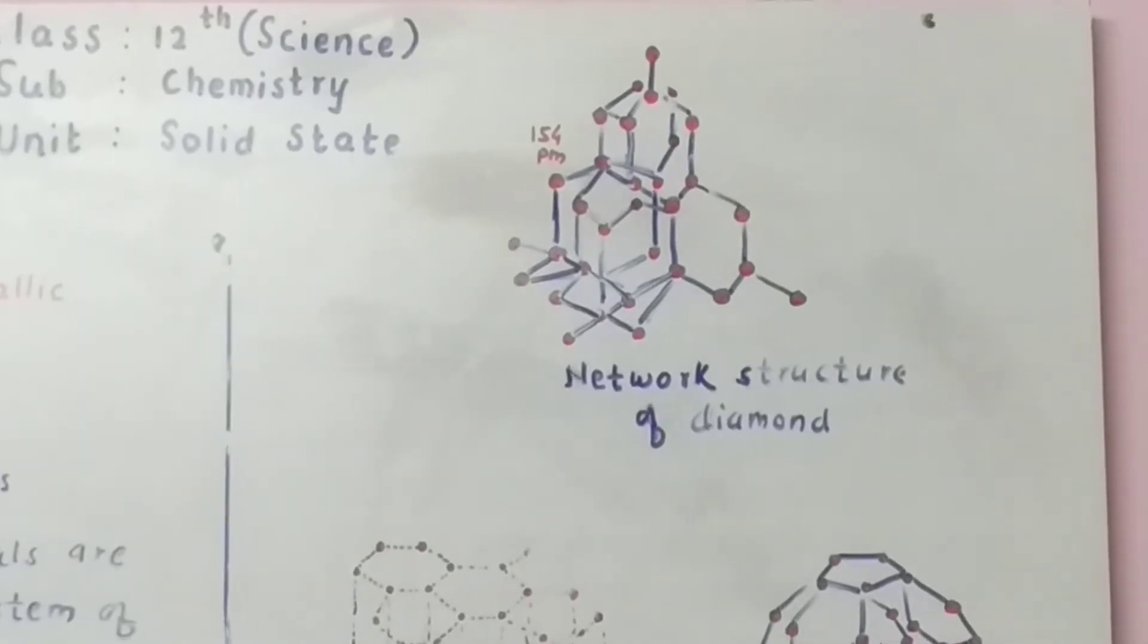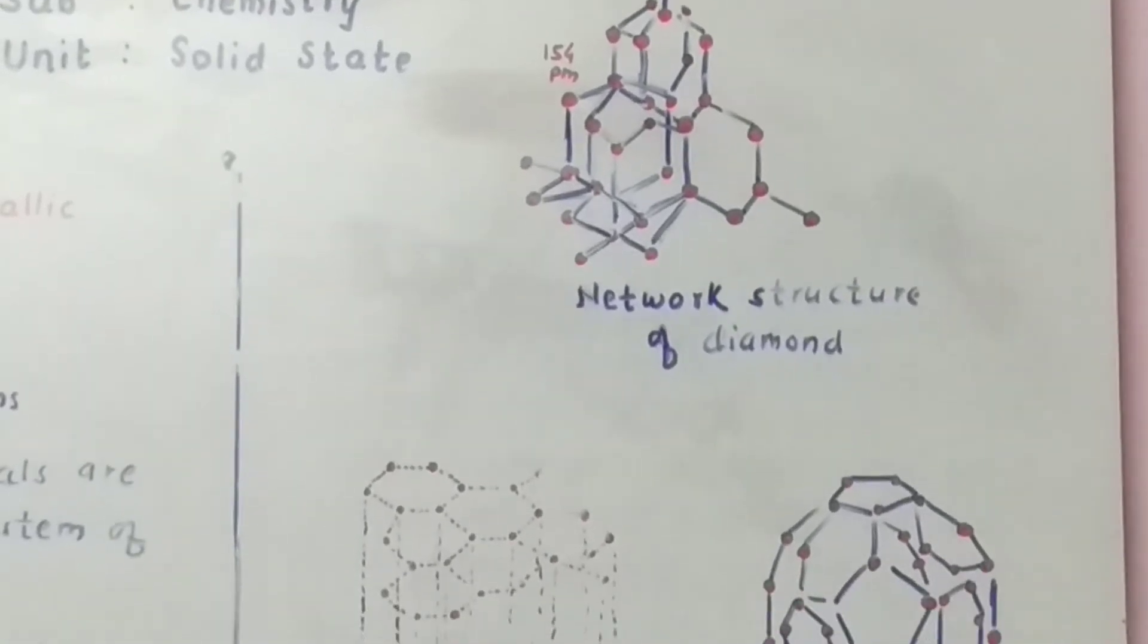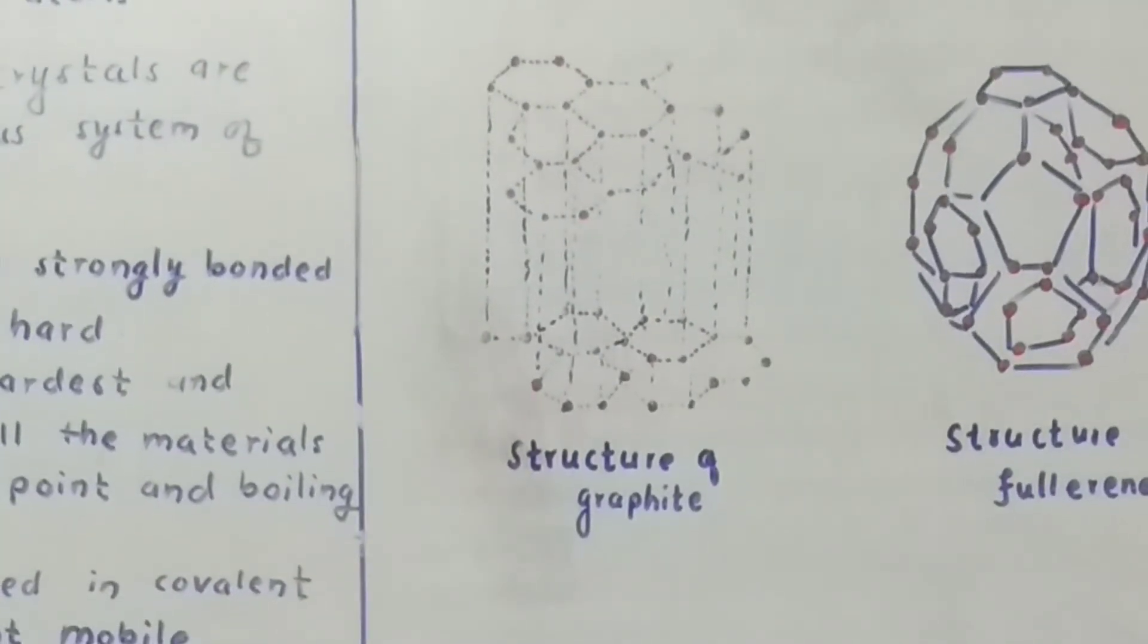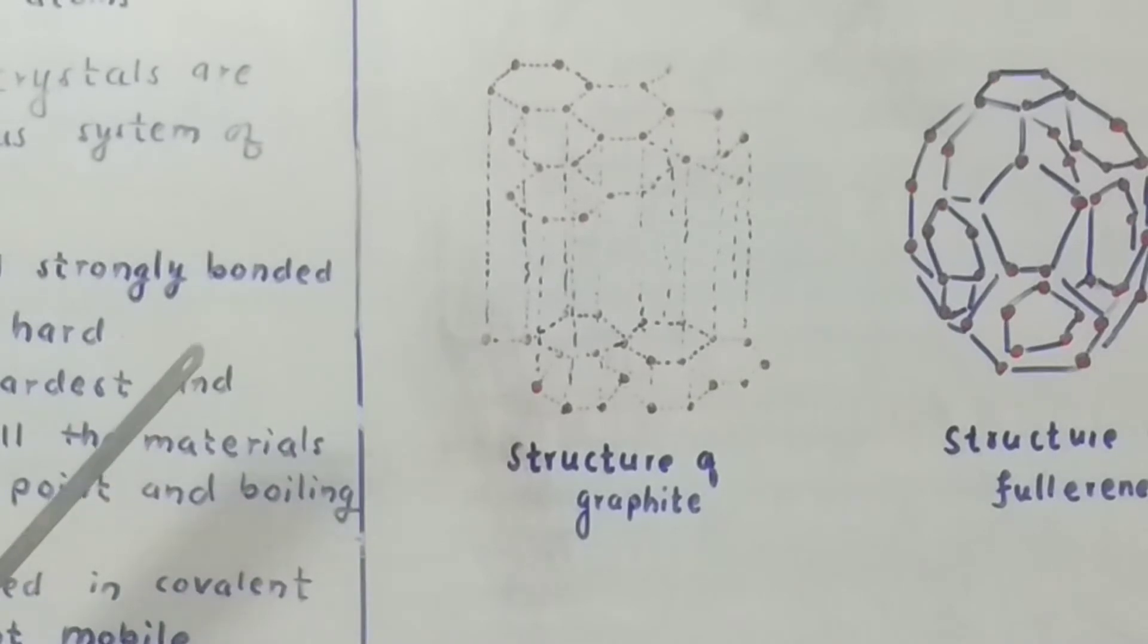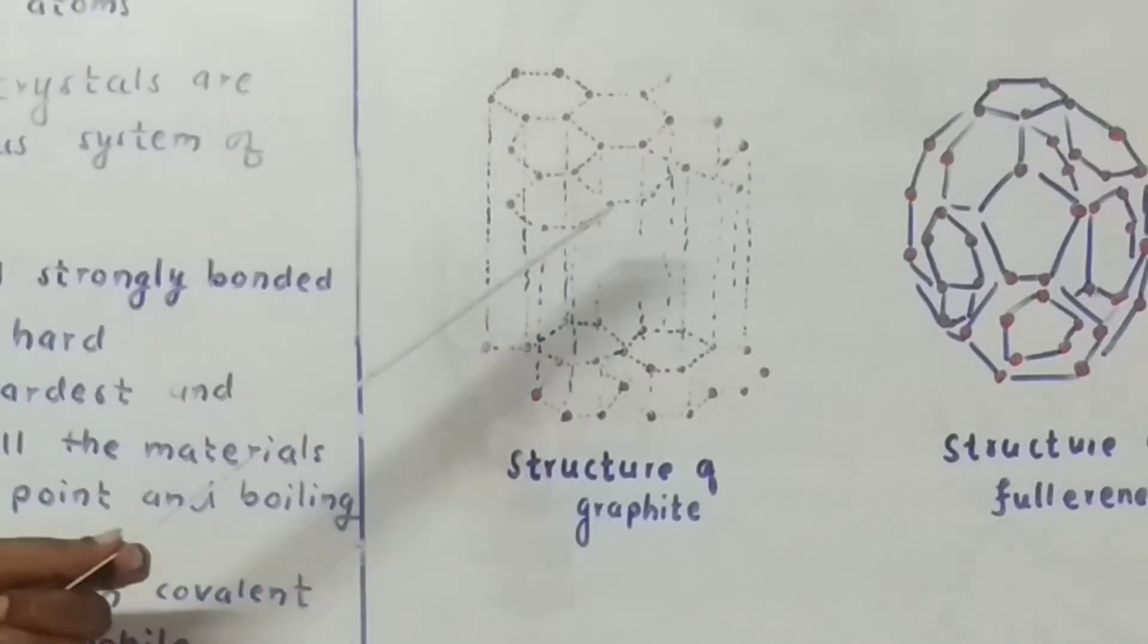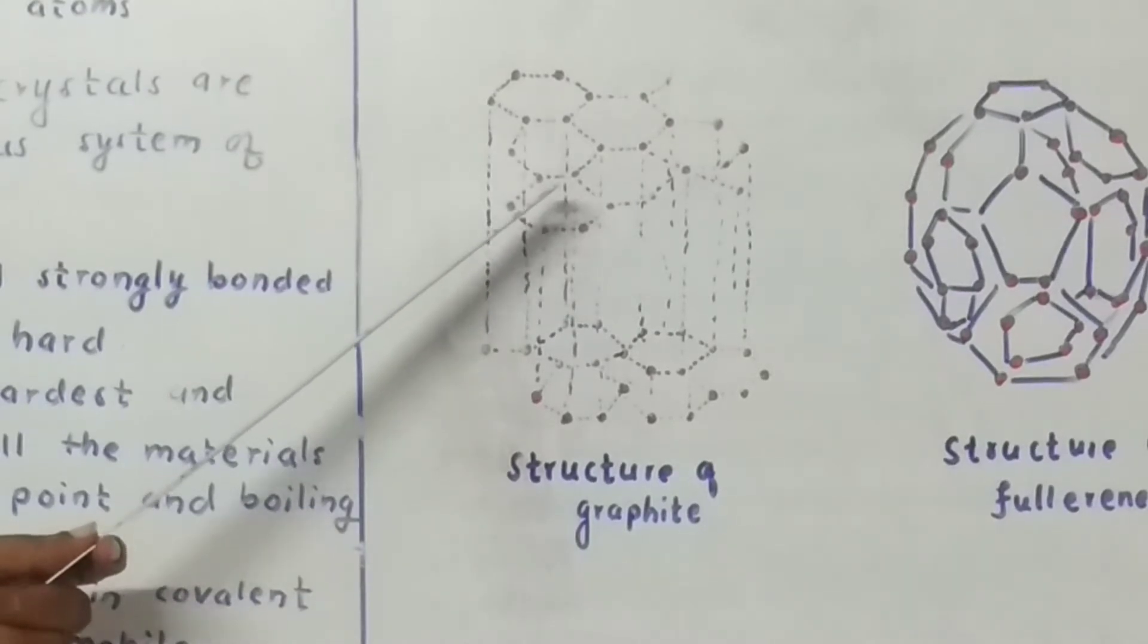Here second structure of graphite is given which is also an example of covalent network crystals. Here it is also second allotrope of carbon.